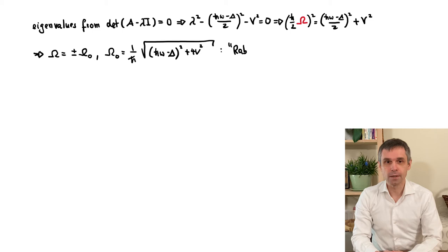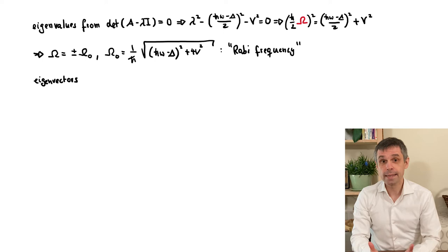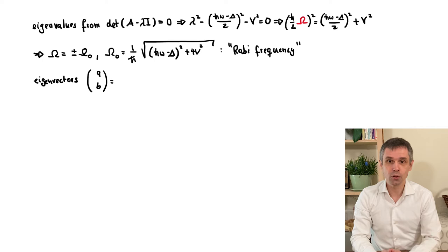This is known as the Rabi frequency, and we will uncover its physical interpretation very soon. But for this, we will need the complete solution, and hence also the eigenvectors.